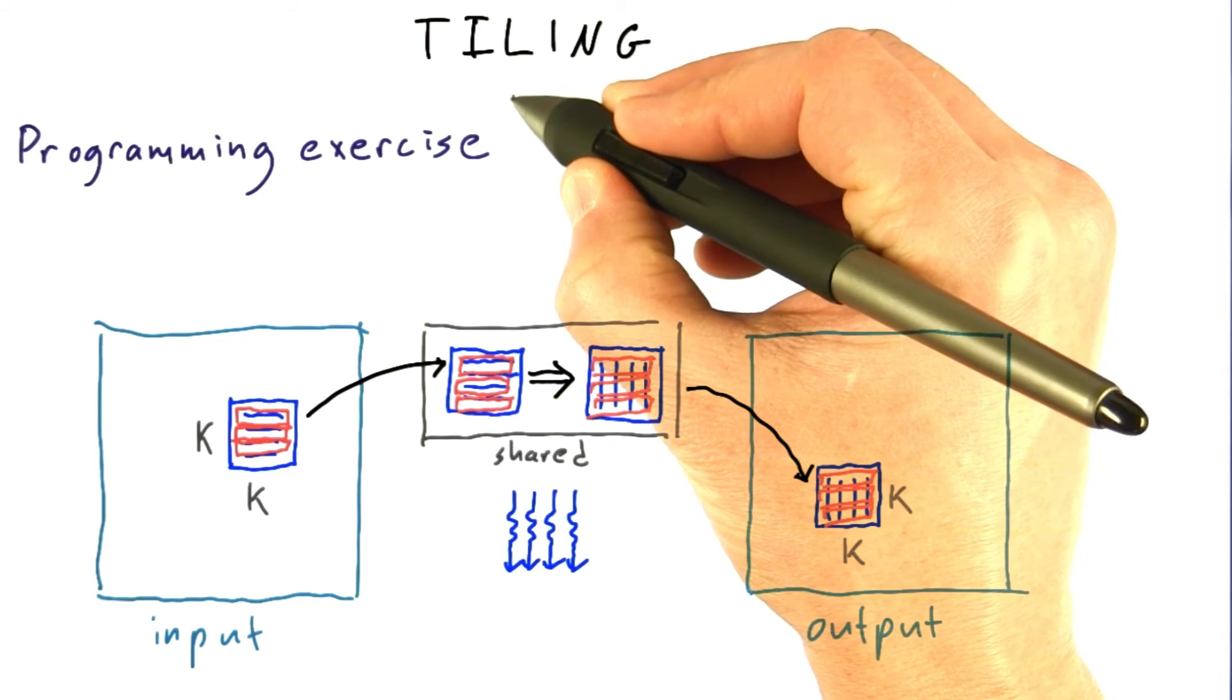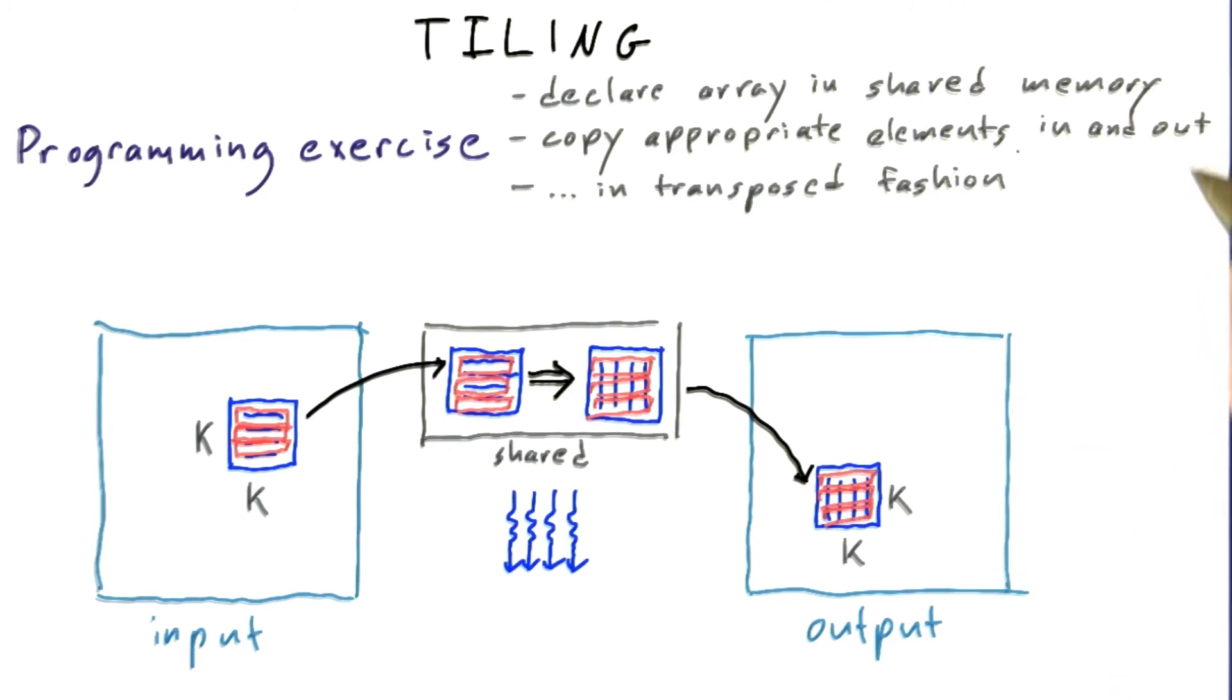You should modify the kernel code to declare an array in shared memory and copy appropriate elements in and out so that the final elements are written out in transposed fashion. Don't forget to add any sync threads barriers you need to ensure the correct result.